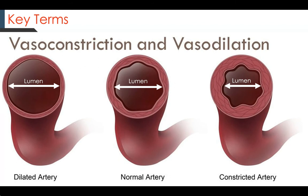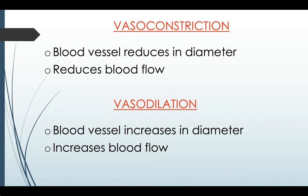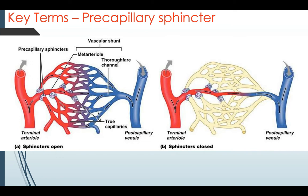Vasoconstriction is when blood vessels decrease in size. Vasodilation is when blood vessels increase in size, as we can see in the diagram here. To reiterate: when vessels constrict, they reduce blood flow in that area of the body; when blood vessels dilate, they increase blood flow to that area of the body.